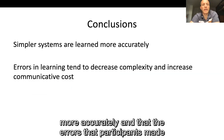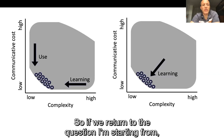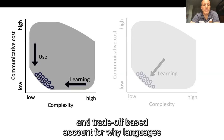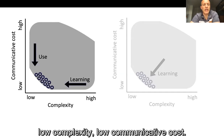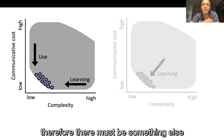Across those three experiments, our results suggest that simpler kinship systems are learned more accurately, and the errors participants make during learning tend to decrease complexity while increasing communicative cost. Returning to the question we started from, our results favour the trade-off-based account for why languages reside on that optimal frontier of low complexity and low communicative cost. Errors in learning reduce complexity without regard for the consequences for communicative cost, so something else — for instance, language use — must be acting to drive down communicative cost.